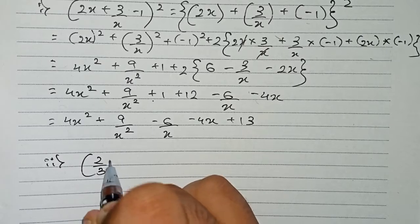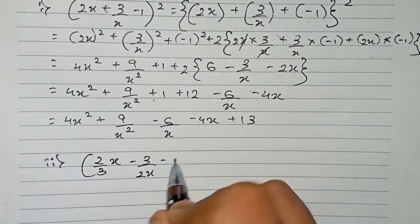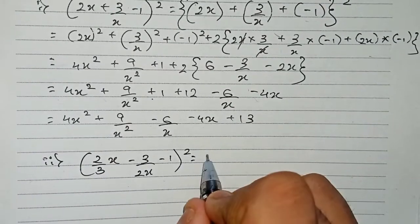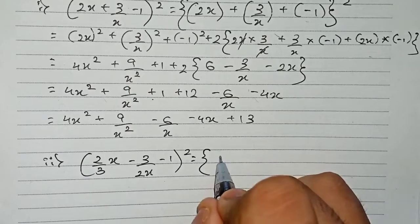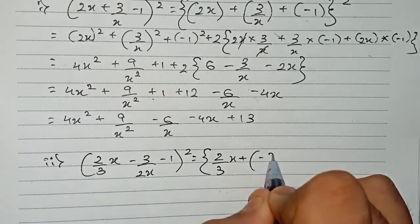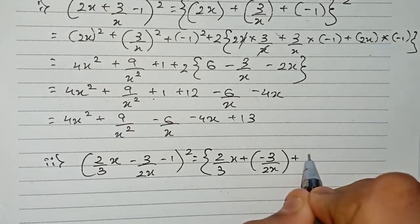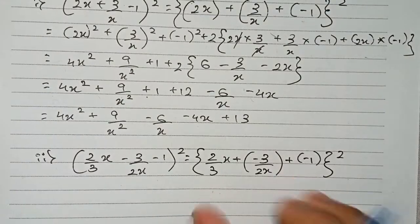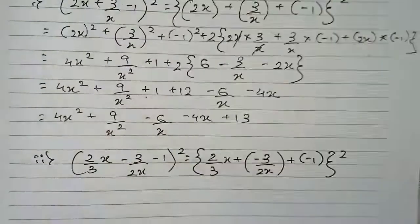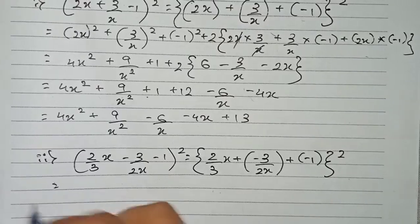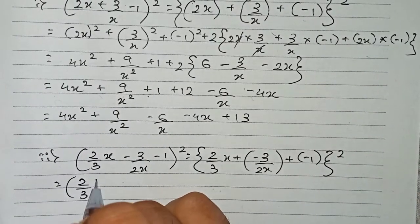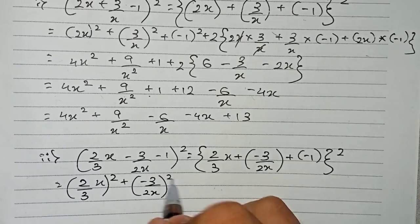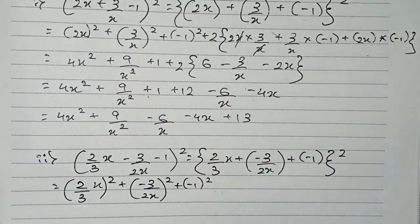Now for question two: (2/3x - 3/2x - 1)². We rewrite the minuses as pluses, giving (2/3x + (-3/2x) + (-1))². Applying the identity, we write: (2/3x)² + (-3/2x)² + (-1)².